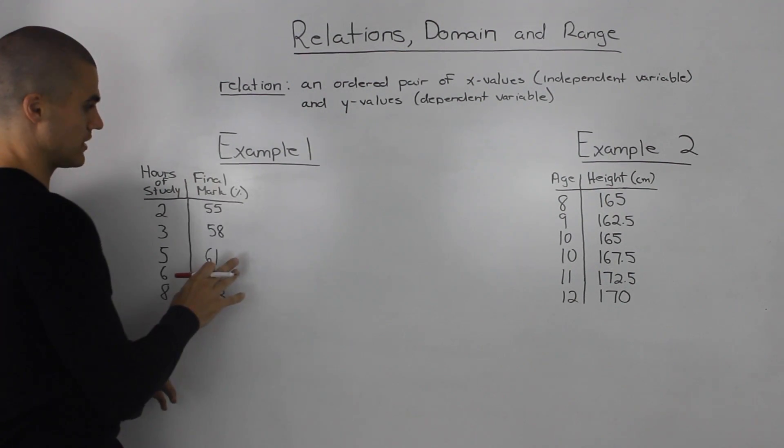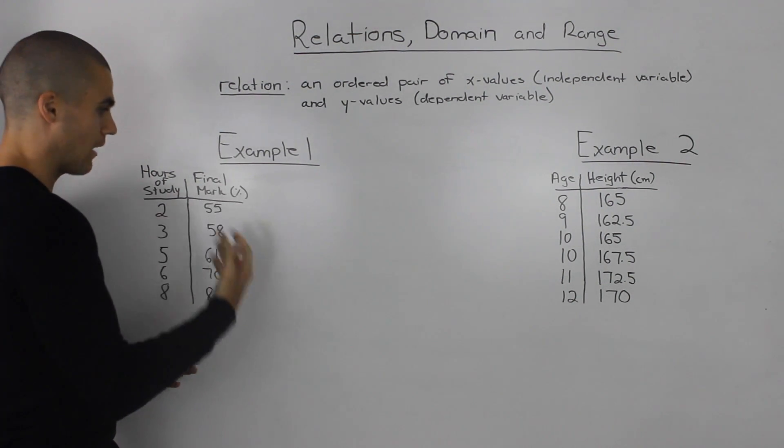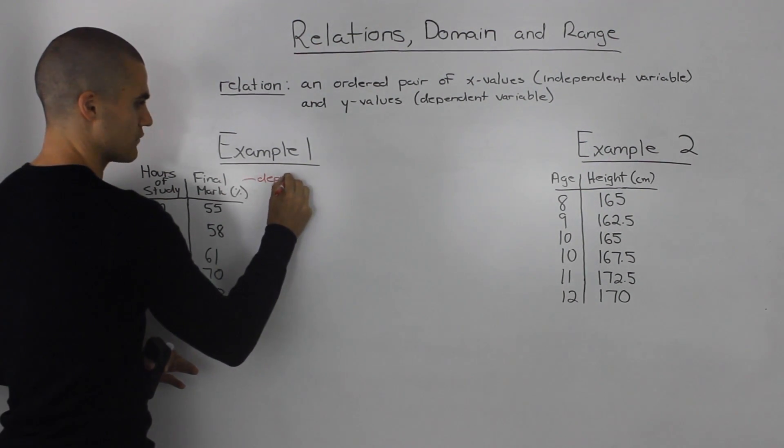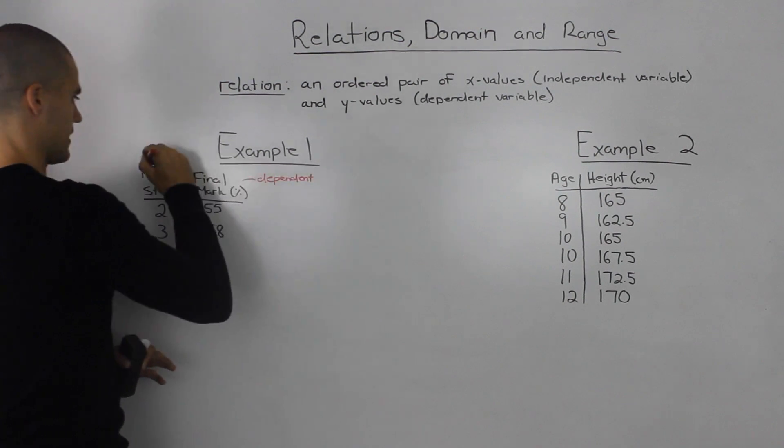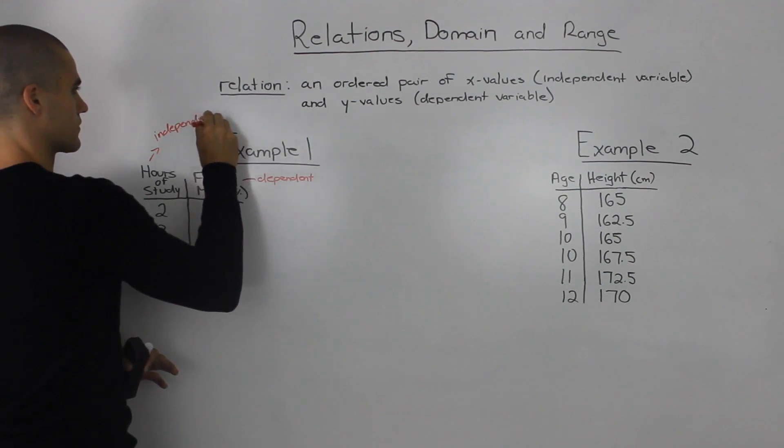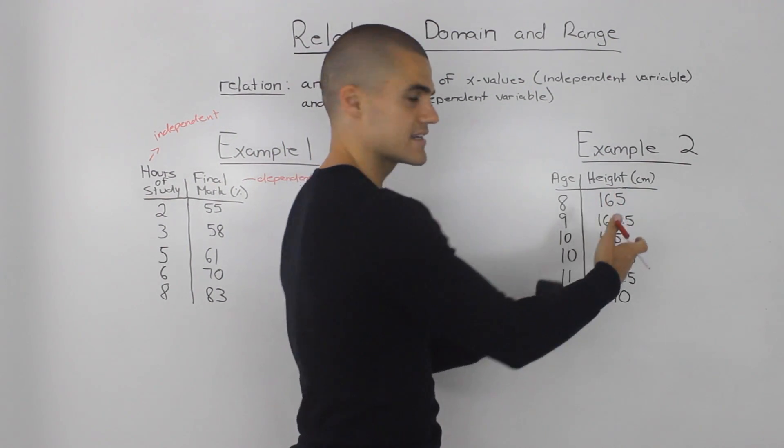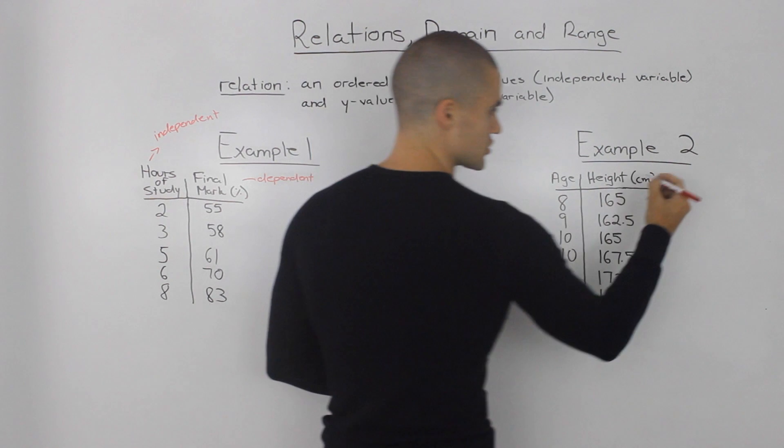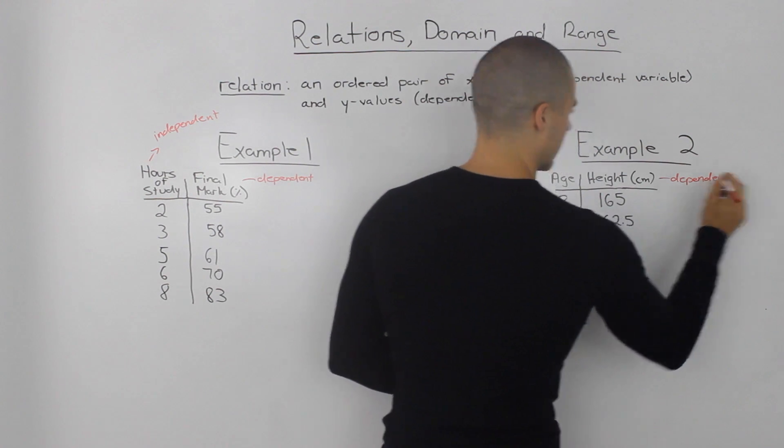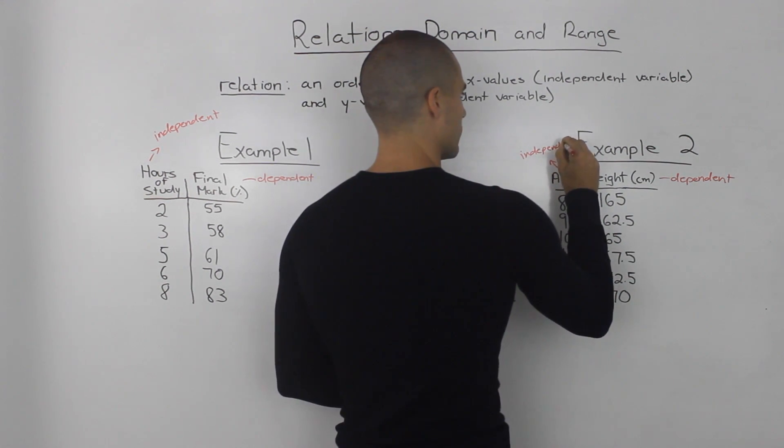In this specific relation here, our final mark is dependent on the hours that we study. So the final mark is the dependent variable, and the hours studied is the independent variable. In our second relation, the height is dependent on the age. So the height is the dependent variable, and the age is the independent variable.